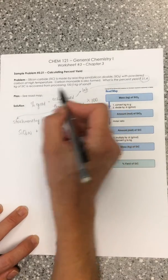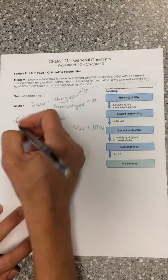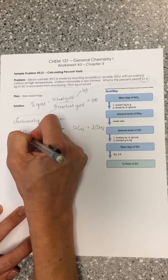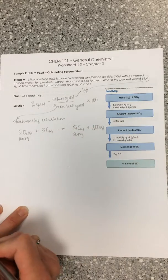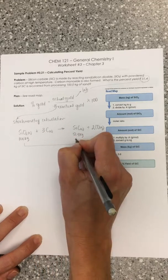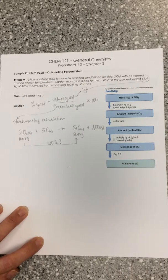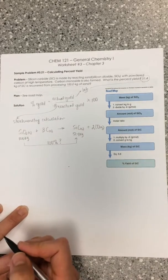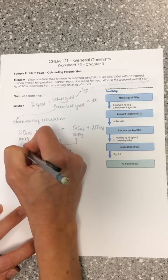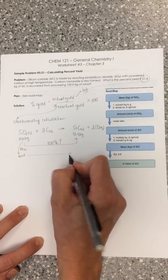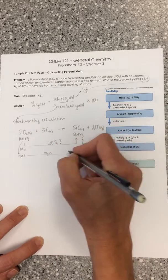They tell us that we have a processing of 100 kilograms of sand. Remember, the sand is silicon dioxide. So we have 100 kilograms of this, and they tell us that we make 51.4 kilograms of this. So the question is, is this 100%? Did we make as much as we theoretically could have? So what we really need to do is we need to do one of our stoichiometry calculations. We need to take this, and we need to convert it to moles using our molar mass. We need to change who we're talking about using our balanced chemical equation. And then we need to use a molecular weight to get here.